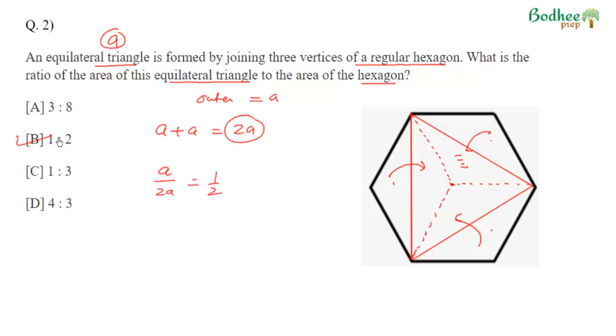So if the area of the equilateral triangle is A, the outer area is also A. Combining both, the total hexagon area is 2A. The ratio of the area of the equilateral triangle to the hexagon is 1 to 2 — option B. Just by simple observation, we can solve it. Very easy — a must-attempt question for this set.